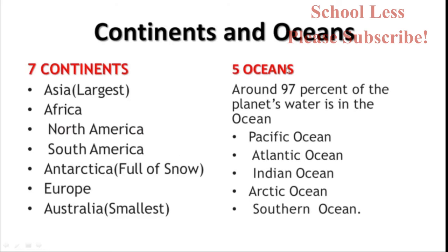There are five oceans. 97% of the planet's water is in the ocean. The five oceans are: Pacific Ocean, Atlantic Ocean, Indian Ocean, Arctic Ocean, and Southern Ocean.